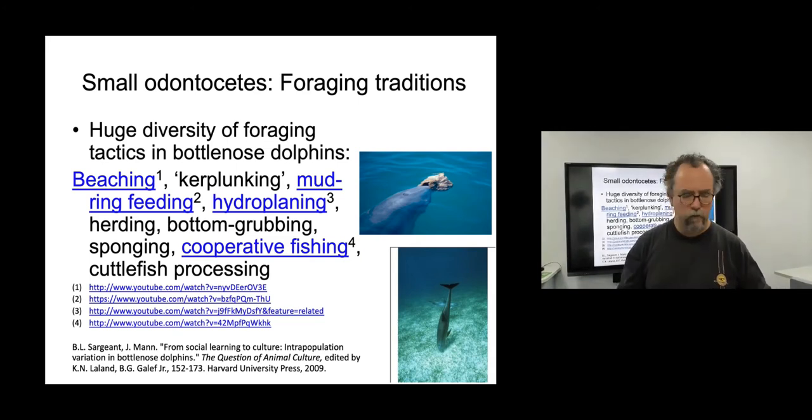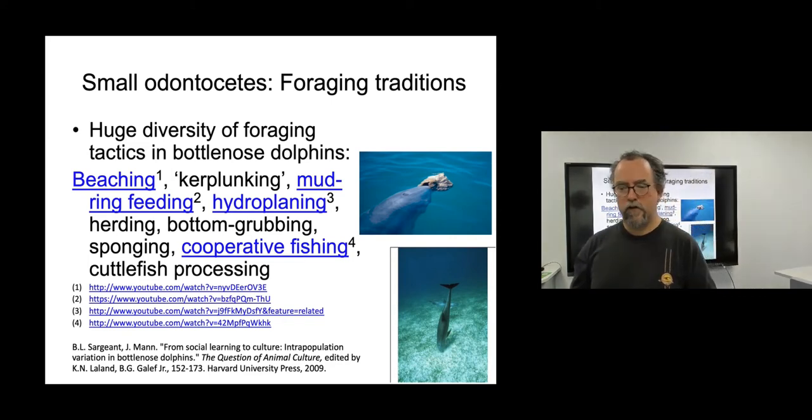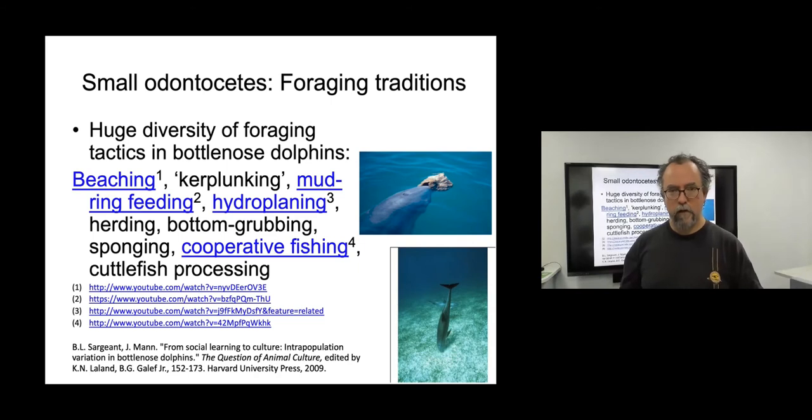So starting with smaller odontocetes, what a lot of focus has gone on to in this particular area is on foraging traditions. So if you look at just one species, the bottlenose dolphin, as we have previously, actually, it's not just the case of dolphins eat fish. There are many ways in which they can extract their nutrition from the coastal habitats in which they largely live. And I've given you a list of ones here, beaching, kerplunking, mud ring feeding, hydroplaning, and cooperative fishing. And the nice thing about these behaviors is they're very striking and they're very popular topics for nature documentaries. So there are a string of videos you can watch linked to in this slide to actually see what these behaviors are rather than spending a lot of time describing them. But there are many populations where they develop distinct foraging tactics, and these vary from place to place and also within the same general habitat.